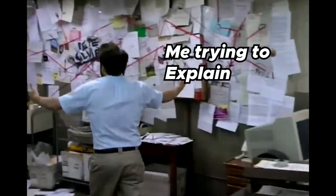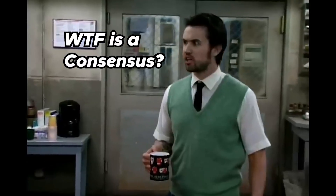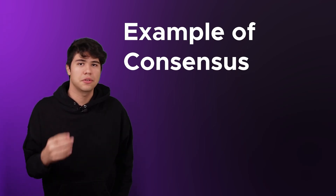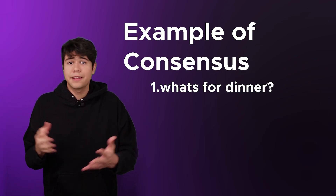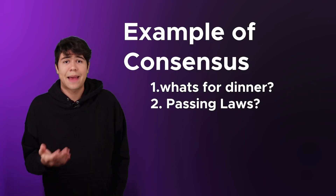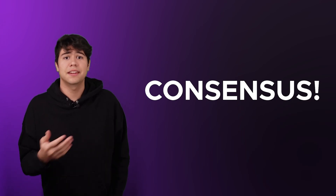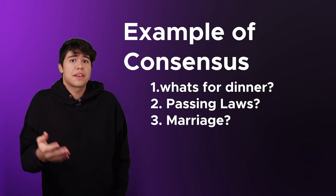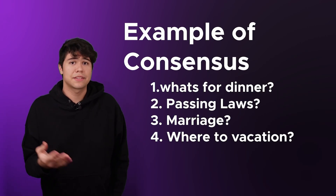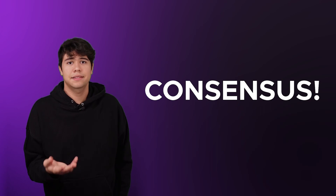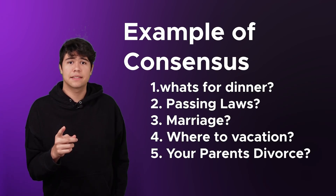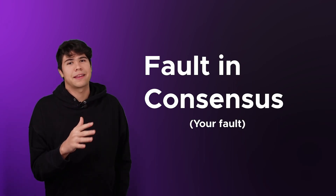This video is about blockchain consensus theory. Here are five examples of consensus being used in a sentence. You and your friends don't know what to eat — you guys need to come to a consensus and agree on something. Government passing a law? The lawmakers need to come to consensus. Your parents got married? Technically, that is a consensus. Your family decided to vacation in Mexico? That is a consensus. Your parents divorce? That is a great example of consensus, but an example of it not working.